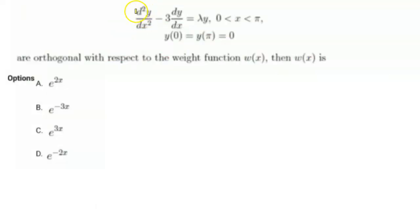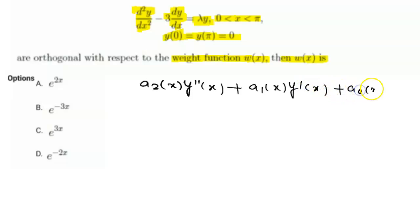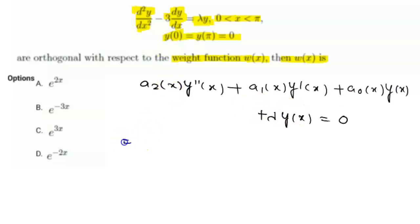The next question: given the equation d²y/dx² − 3 dy/dx = λy, where x ∈ [0, π] with y(0) = y(π) = 0, the eigenfunctions are orthogonal with respect to a weight function w(x). We have to find w(x). In the standard form the equation is written as a₂(x)y″(x) + a₁(x)y′(x) + a₀(x)y(x) + λy(x) = 0.